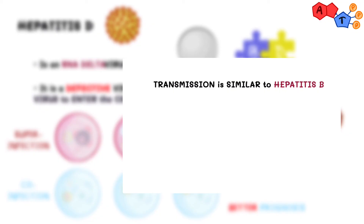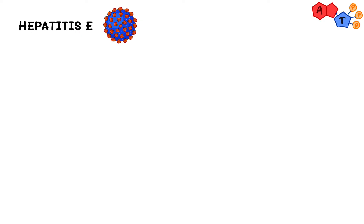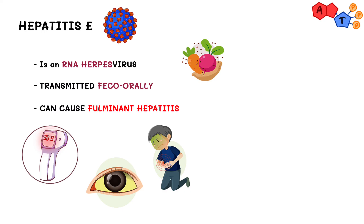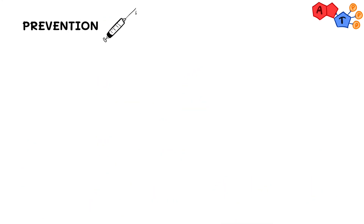Transmission for hepatitis D is the same as hepatitis B — blood, sexual intercourse, or perinatally — which is easy to remember since they occur together. The key thing to remember: D for dependent, D for hepatitis D. The last one is hepatitis E, an RNA virus. It's similar to hepatitis A in that it has fecal-oral transmission and can cause fulminant hepatitis. The keywords for exam questions are: pregnant woman, third-world country, presenting with acute hepatitis.